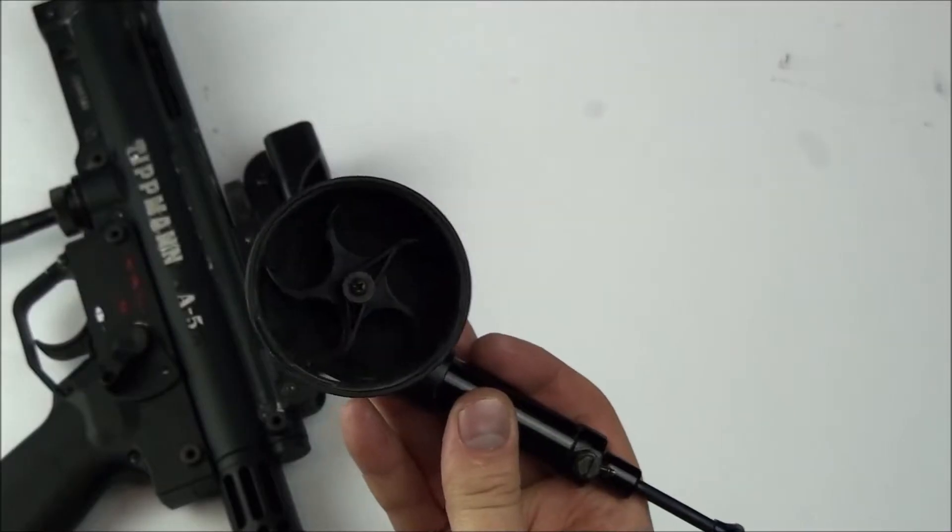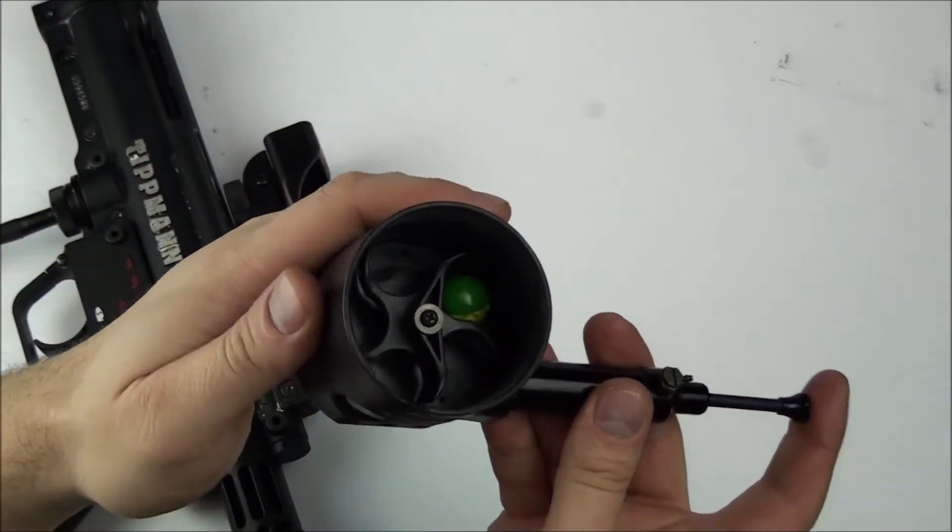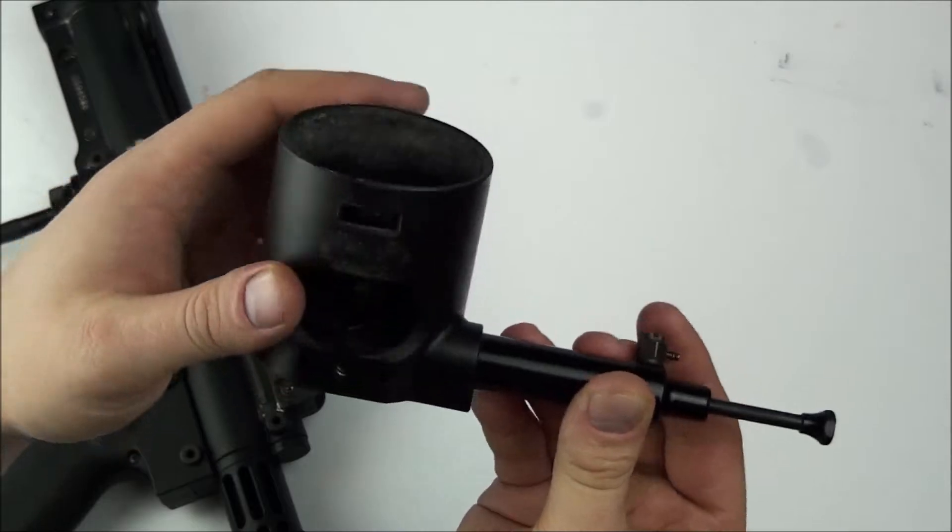The Cyclone will stop feeding once the air tank you are using no longer has enough PSI to operate. Luckily, the Cyclone has a manual feed button should this ever happen, for a few extra shots in a pinch.